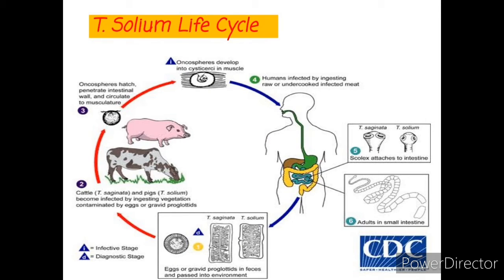The life cycle of Taenia solium is indirect. It passes through pigs or other animals as intermediate hosts and into humans as definitive hosts. From humans, the eggs are released into the environment where they await ingestion by another host. In the secondary hosts, the eggs develop into oncospheres which bore through the intestinal wall and migrate to other parts of the body, where they form cysticercus. The cysticercus can survive for several years in the animals.